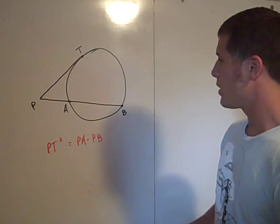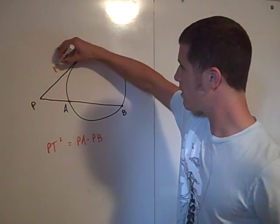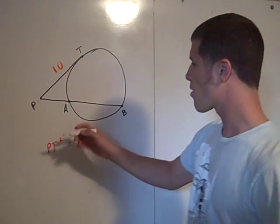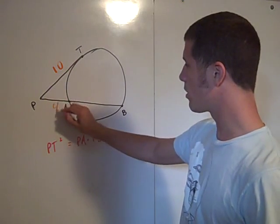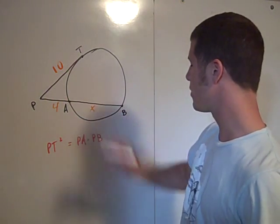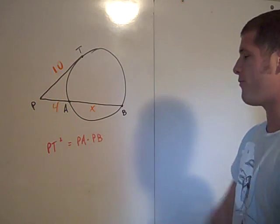So for example, if this were 10 and this were 4 and this is some missing value x, find the value of x.